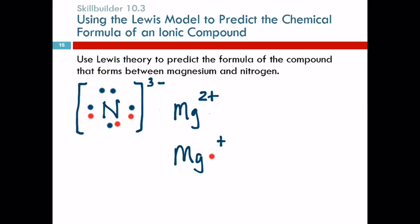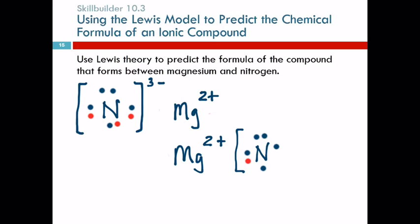Another nitrogen atom might be lurking around. Here's another nitrogen atom with five valence electrons. So magnesium is like, hey, you look like you could use another electron. The nitrogen says, sure, I'll take your electron. So we move that one over. Now this second magnesium is two plus. What's the charge on this new nitrogen? Minus one — it has one extra electron. But is this nitrogen happy? No.